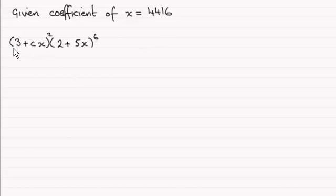Now we've got (3 + cx)² times (2 + 5x)⁶. We already know the expansion of (2 + 5x)⁶ from the previous part. But as for (3 + cx)², what I'm going to do is expand that first of all.